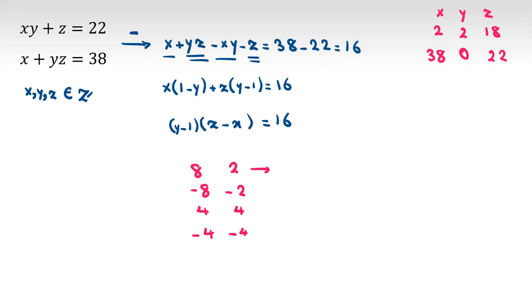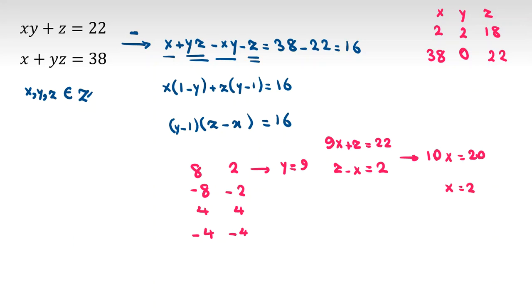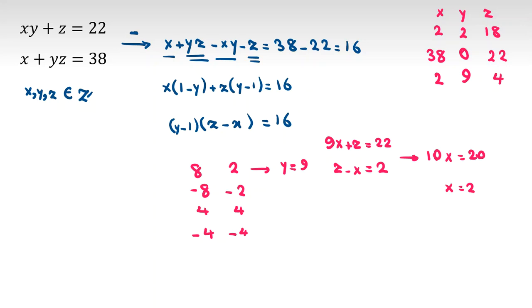Case (8, 2): y minus 1 = 8, so y = 9, z minus x = 2. Replacing y = 9: 9x + z = 22. Subtracting gives 10x equals 22 minus 2 = 20, so x = 2. Then z = x + 2 = 4. Checking: x·y + z = 18 + 4 = 22 ✓, x + y·z = 2 + 36 = 38 ✓. Valid: (2, 9, 4).